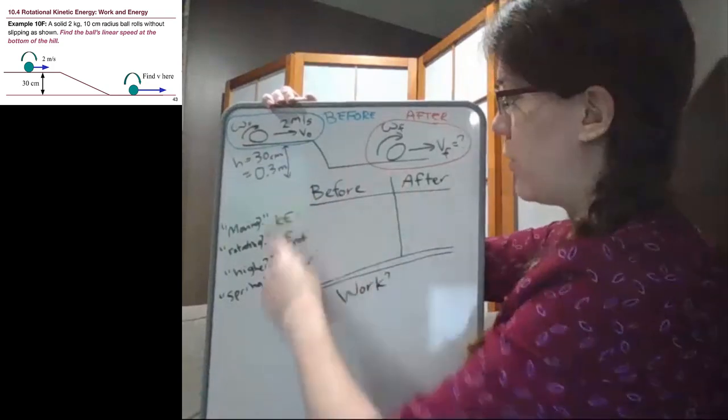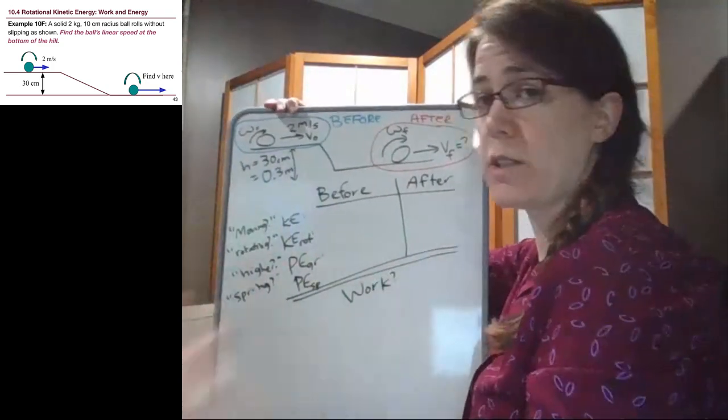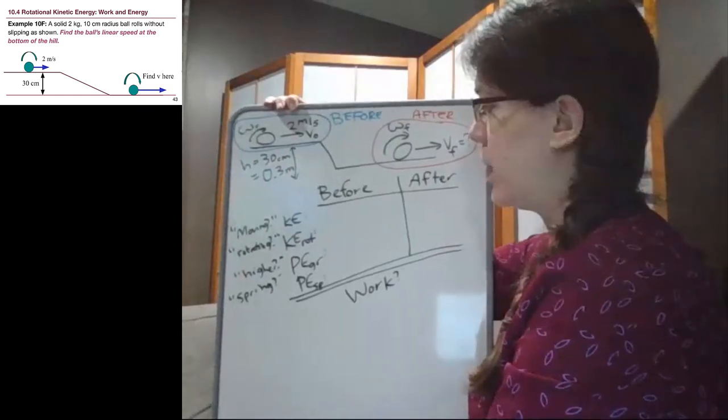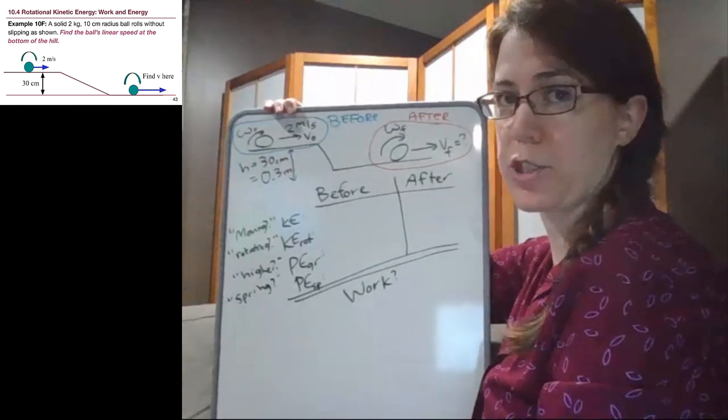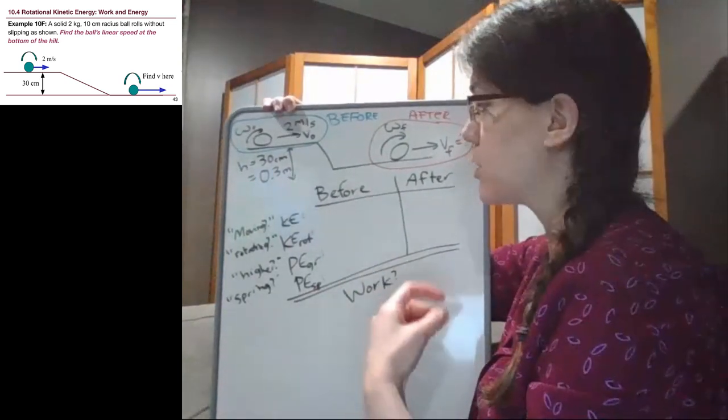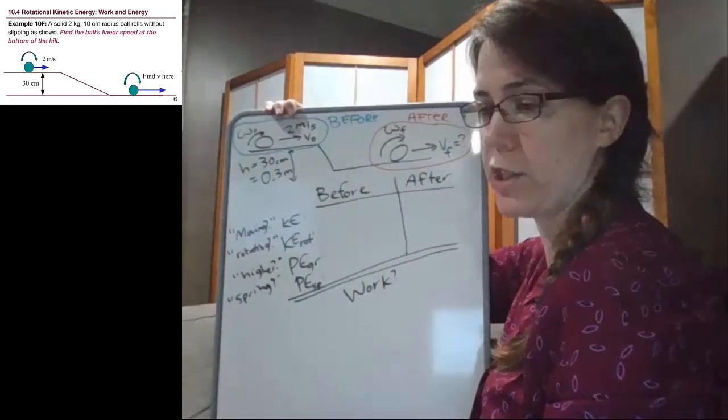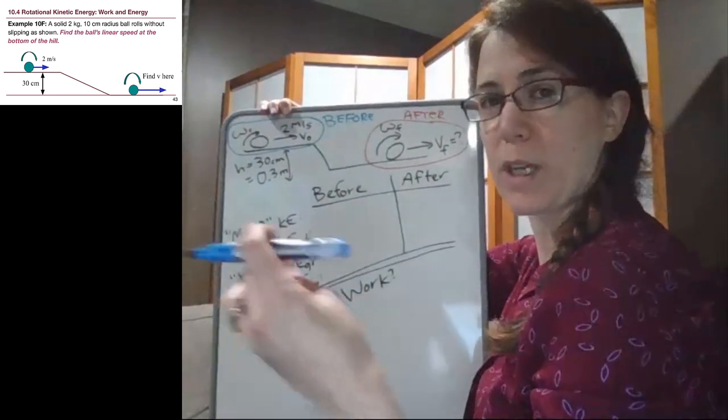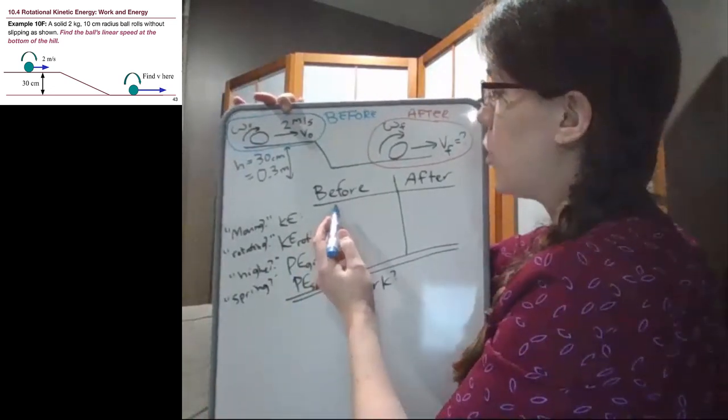This setup of writing out all of the terms in this table is not necessary to solve the problem, but it's very useful if we aren't sure if we've accounted for all the energy types. By forcing ourselves to look for every single type of energy before and after, we can be confident we've looked all the places we need to.